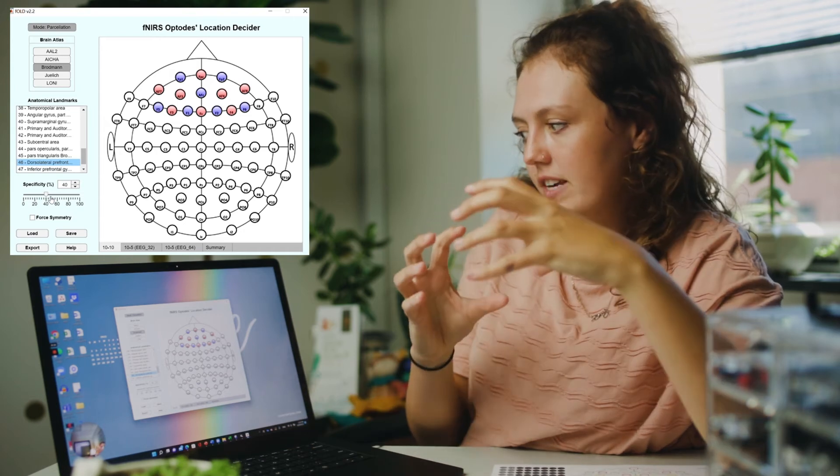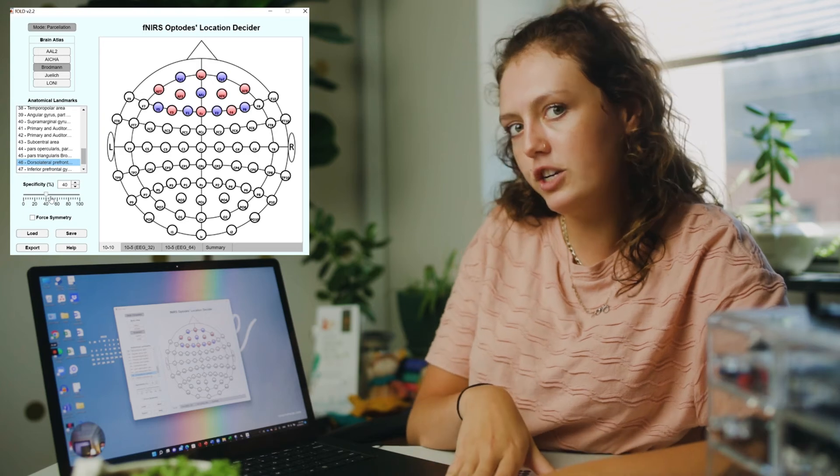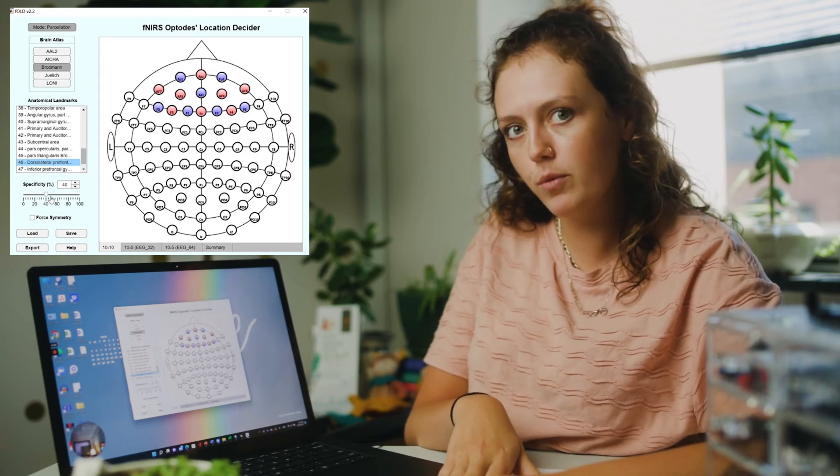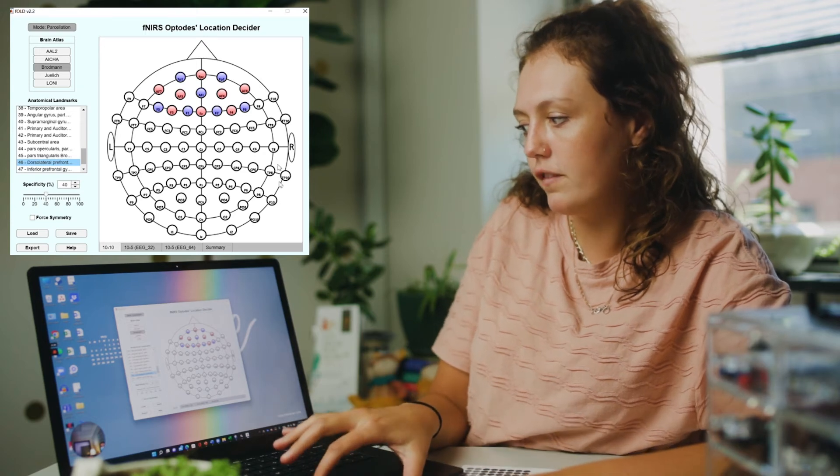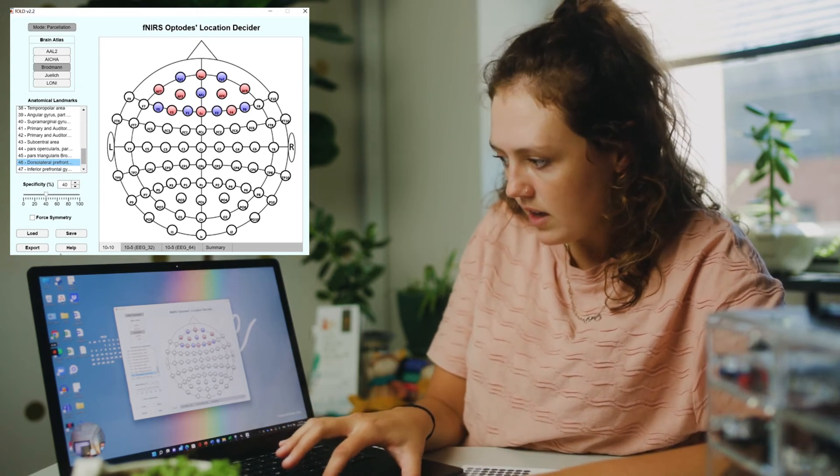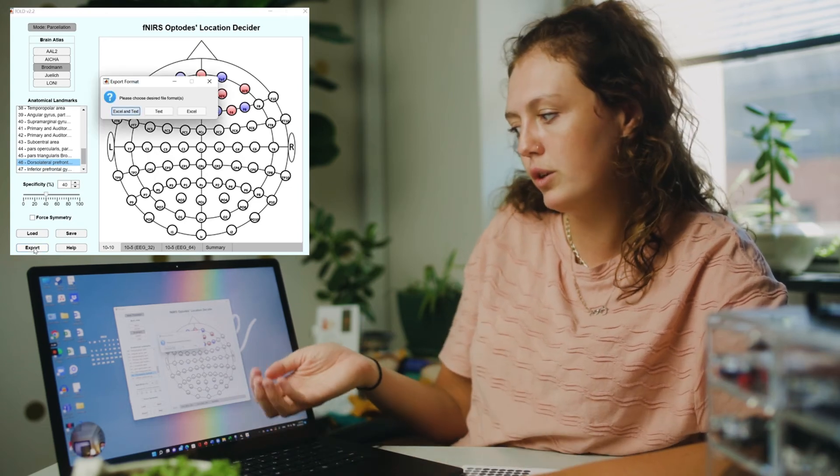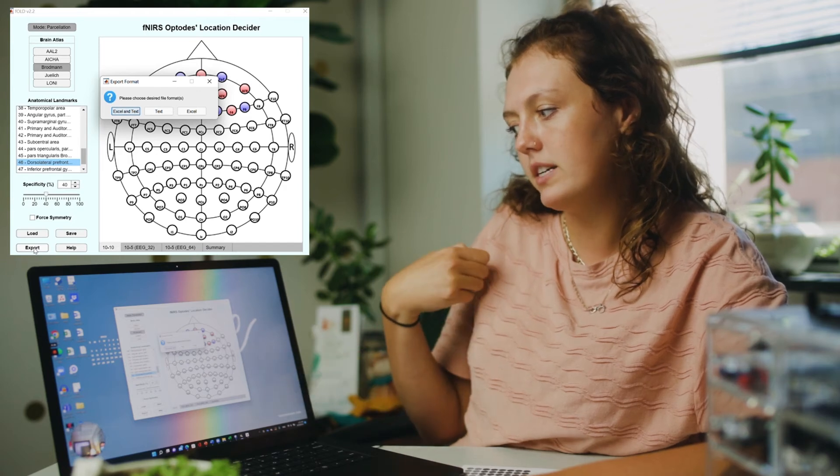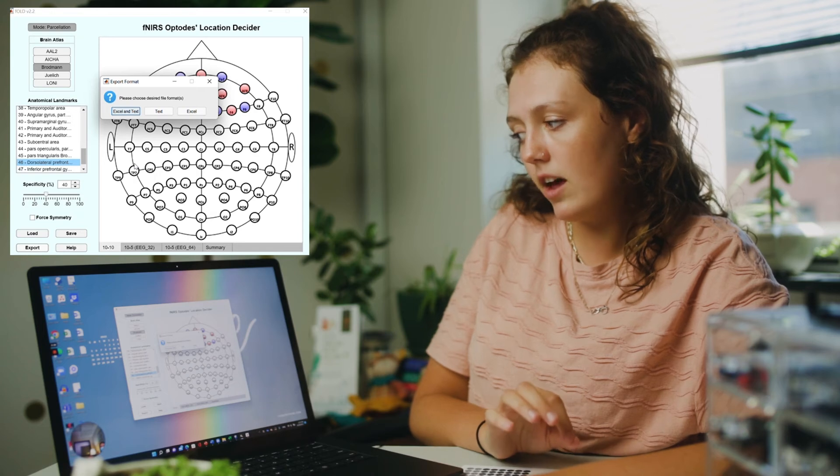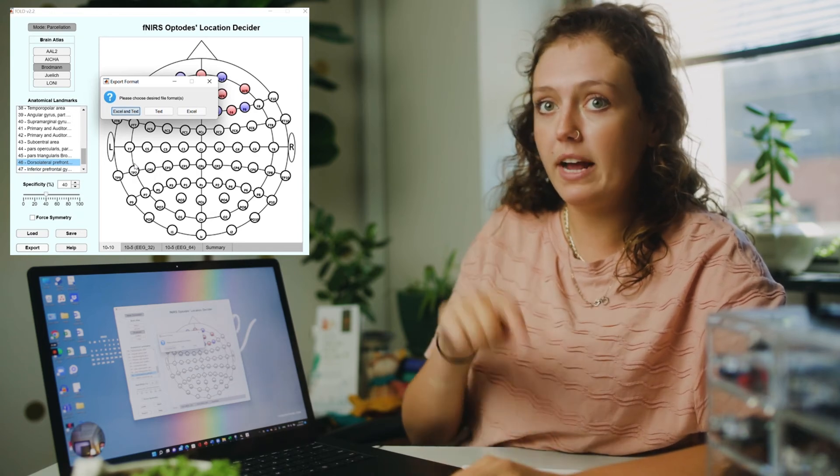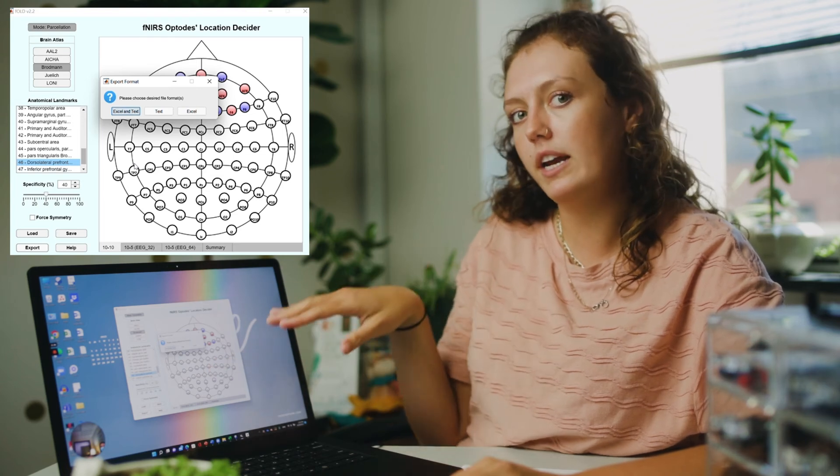So I want to save this because I'm going to use this as a map to then plot my configuration on the Nearsite montage software. I'm going to export it as a text file because in order to upload this to the Nearsite montage, it needs to be saved as a text file. You could also save it as an Excel and it will give you the plot points, and you can manually put it in. But this will allow me to just upload it to Nearsite and it will populate it automatically.